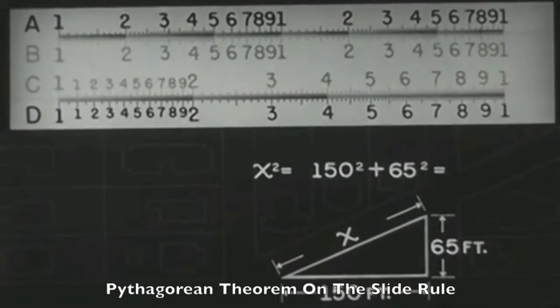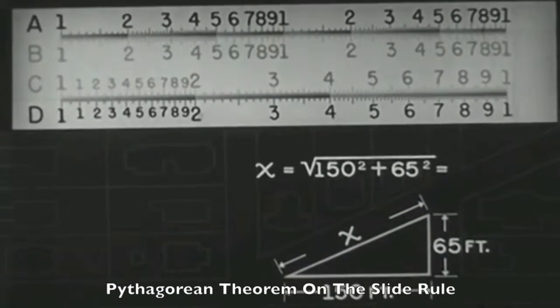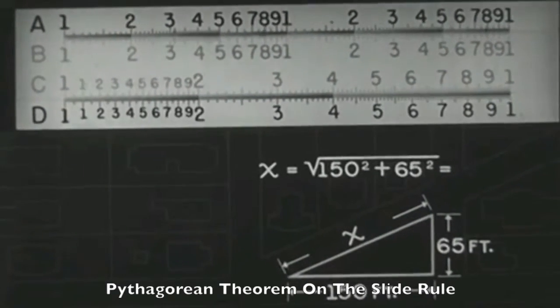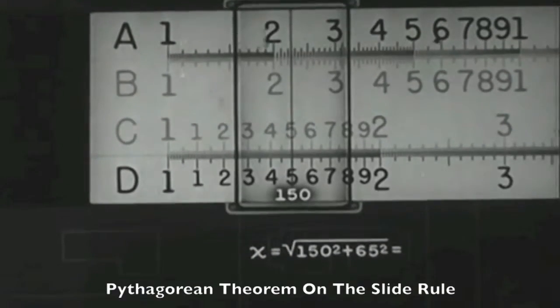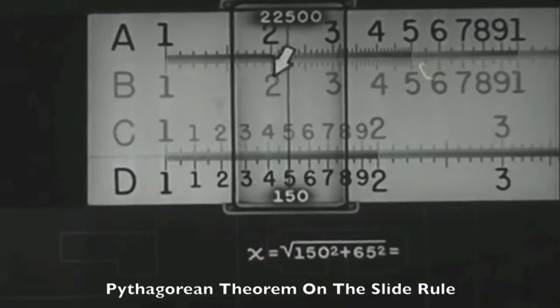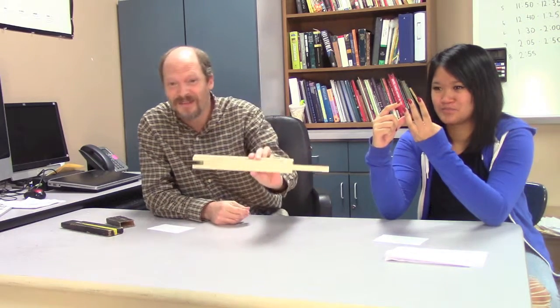So back in the day, we didn't have calculators. You want to know what complicated math is, you can either do it in your head, which takes a long time, right? Even if you're smart, it takes some time. Or you use the slide rule. Quick, what's 2.5 times 16? No, no, you don't have any technology, you don't have a calculator. Quick, what's 2.5 times 16? Um, okay, hold on. It's 40. The answer is 40.